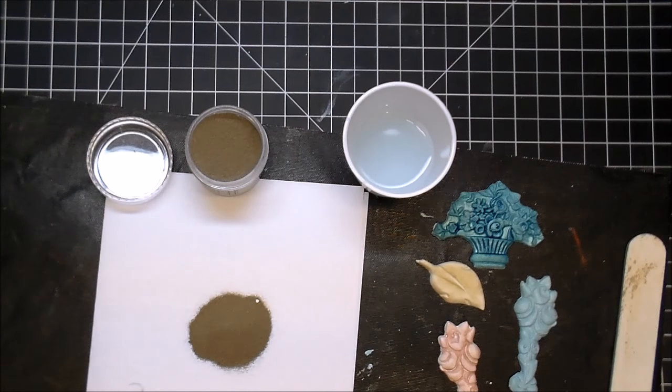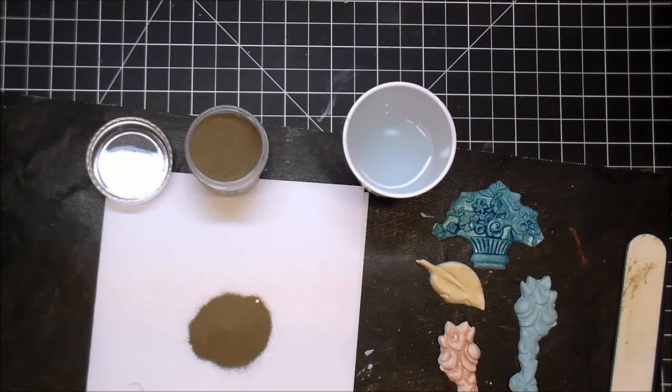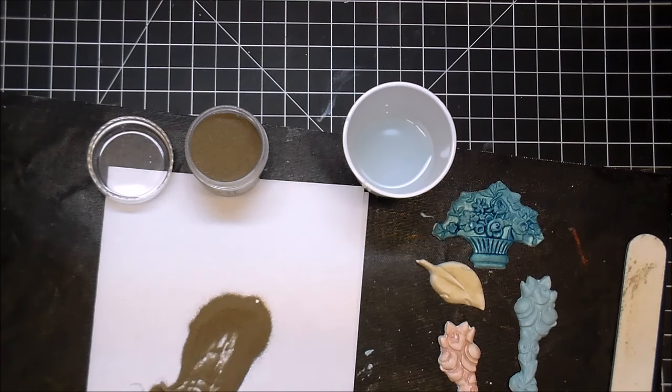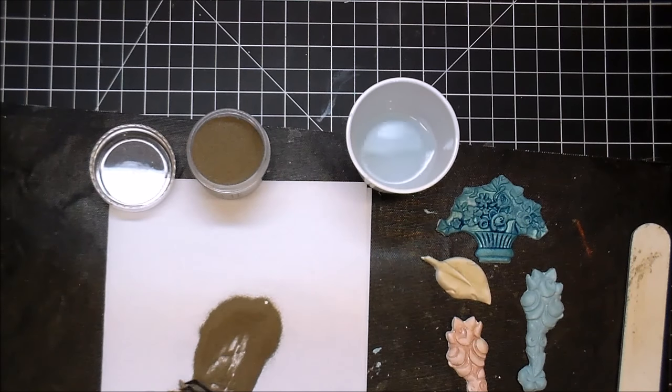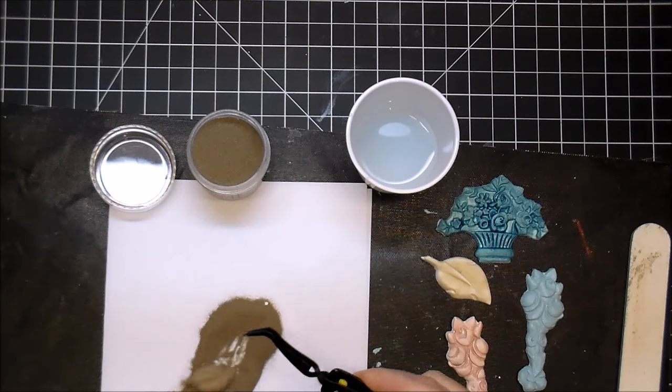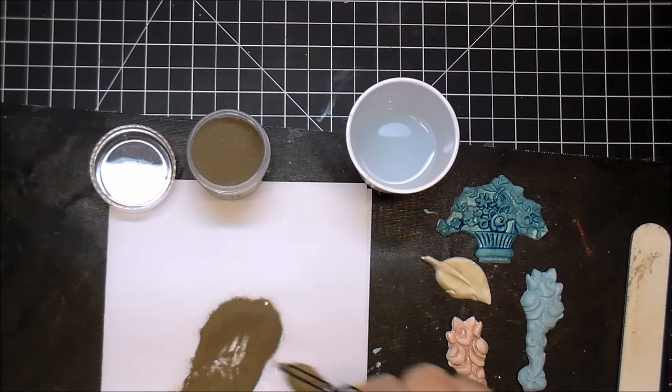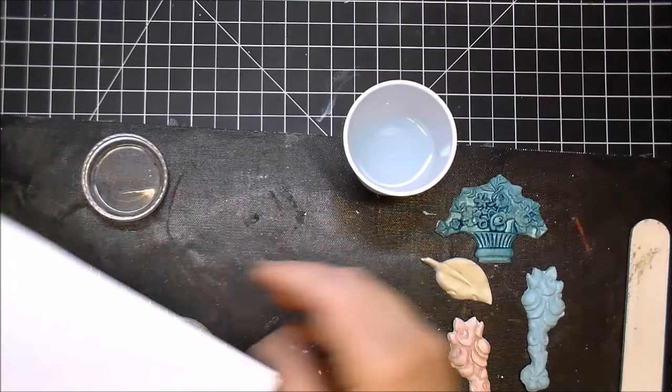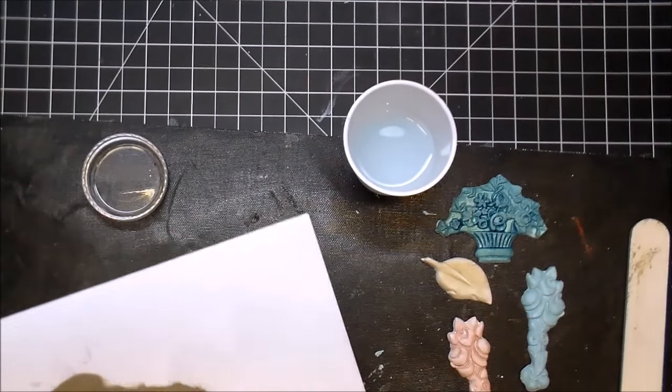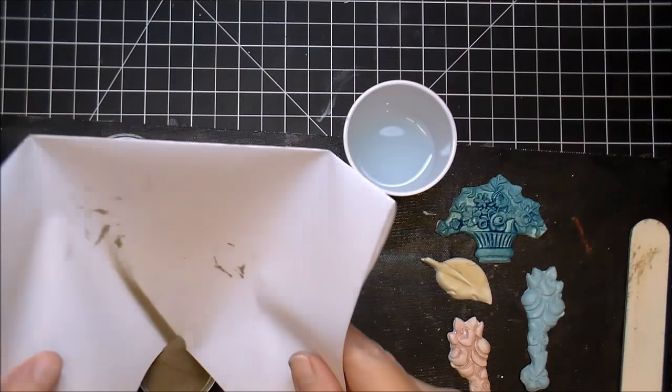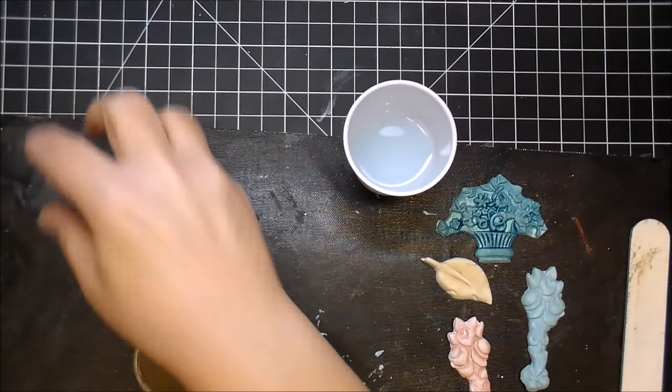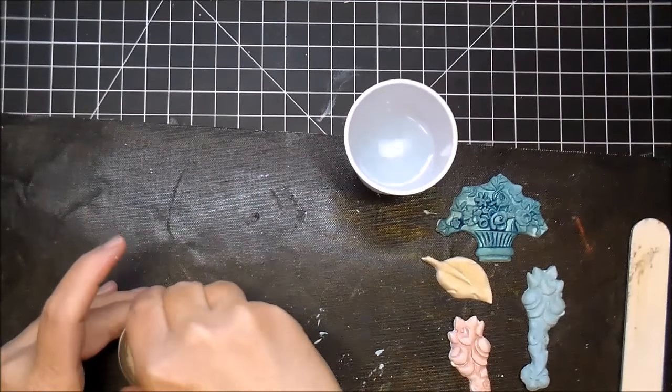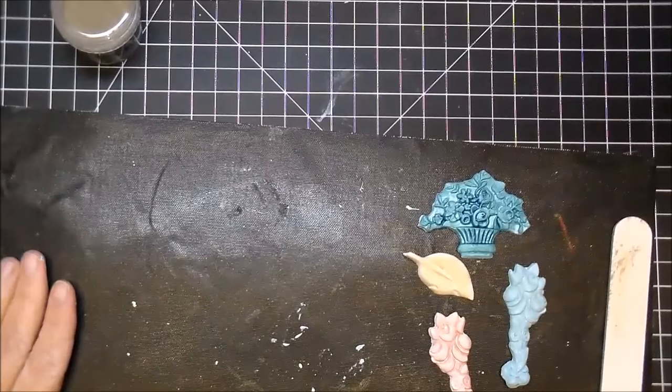And then I'm going to use a pair of tweezers just to kind of get that out of here and dust it off. Go ahead and add your embossing powder back. And now just go ahead and heat set your leaf.